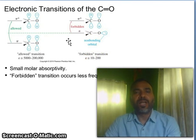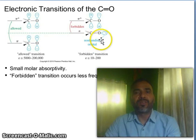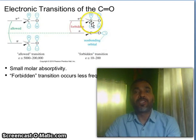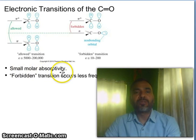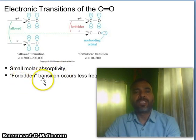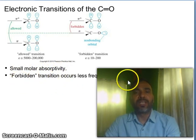This is a matter for discussion — why n to pi star transition is forbidden. The molar absorptivity is small because a forbidden transition occurs less frequently.